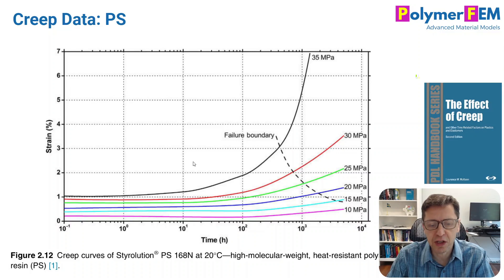To summarize: failure under constant load is called creep rupture and occurs in all thermoplastic materials. There are two ways to predict it. First, perform experiments at higher loads, measure creep rupture times experimentally, plot them on a stress versus logarithmic time graph, and extrapolate to lower stresses or longer times that are impractical to test directly — 10 years or more is simply not feasible to test. Second, use a suitable viscoplastic material model calibrated to experimental data; that model can predict creep rupture failure without needing a precise strain failure threshold, since rupture happens very rapidly.